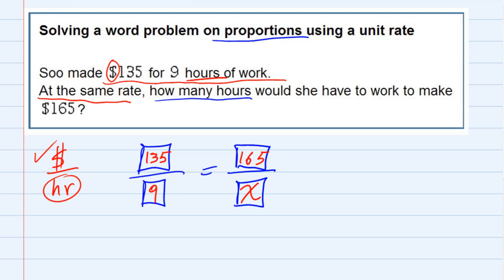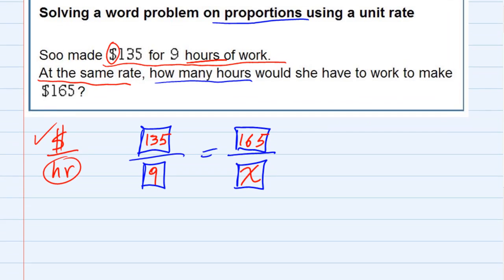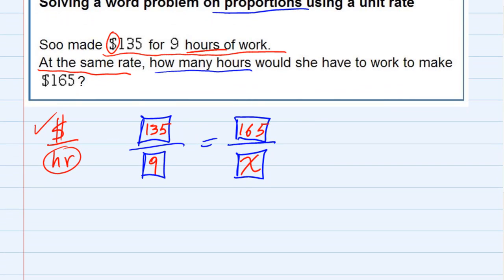So we just need to solve this for X. What we can do is we can cross multiply. Since my X is in the bottom, I can multiply this way. And when I multiply diagonally, I get 135X equals, and I can do the same thing this way, diagonally. 9 times 165.